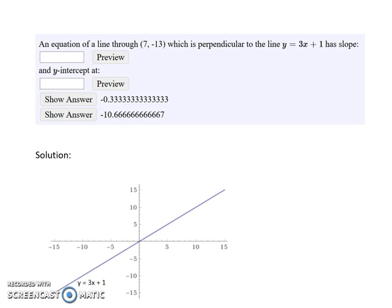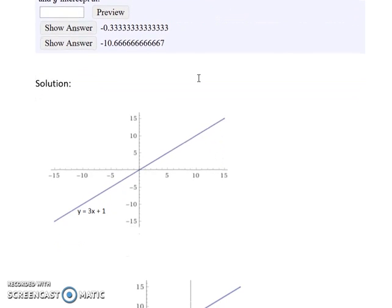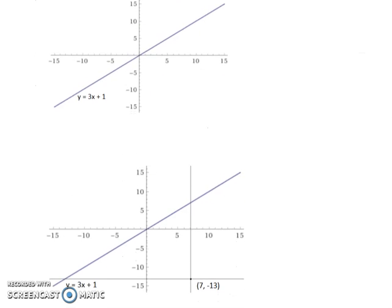Before we begin, let's think about the context of this problem. Here's a graph of the line y = 3x + 1. We want to find the slope and y-intercept of a line that will be perpendicular to this and pass through the point (7, -13).